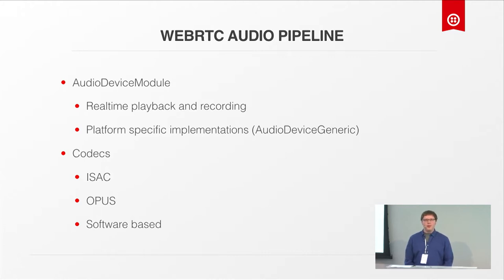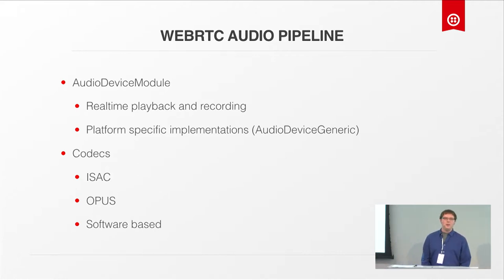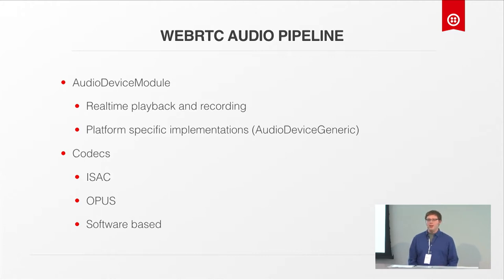When it comes to codecs, the two popular ones you'll see with WebRTC are iSAC and Opus — both software-based implementations on iOS. iSAC is a lower complexity codec, works better at lower bit rates, and is optimized mostly for voice. Opus is more suitable for a wide range of audio content including live music. The disadvantage with Opus is that it uses more CPU on mobile devices. At this point, Opus is the default — you'll get it just by negotiating a peer connection.